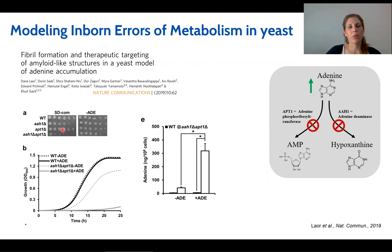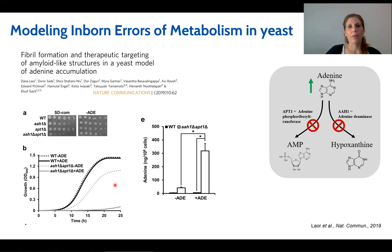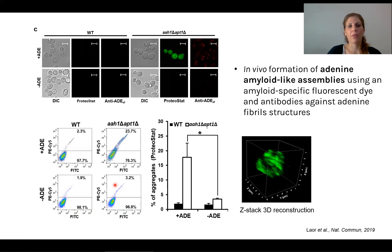When we compared the growth of the yeast — wild type, single mutant, and double mutant — in dose-response and kinetic growth assays, we saw that in the presence of adenine in SD complete media, there was a significant reduction in growth. Interestingly, when we excluded adenine from the media, it suppressed the toxicity significantly, meaning the presence of adenine is toxic to the yeast. We then examined whether this was indeed due to amyloids, and we confirmed in vivo formation of adenine amyloid assemblies using amyloid-specific fluorescent dye as well as antibodies against adenine fiber structures.